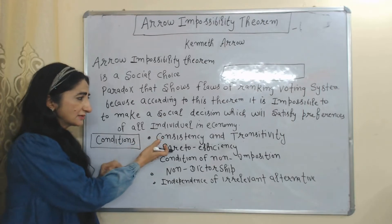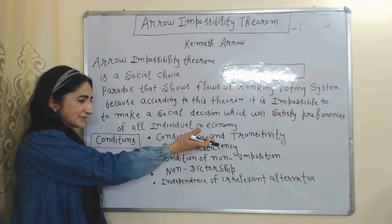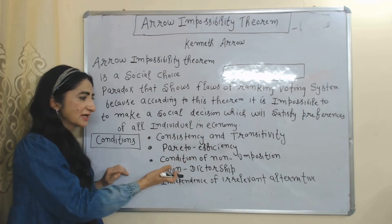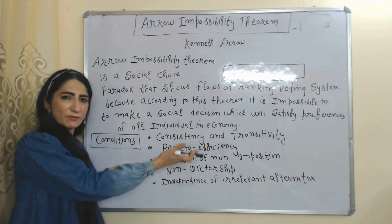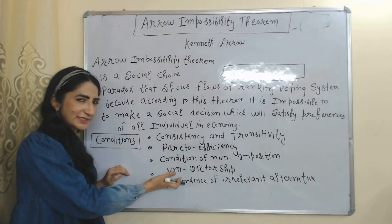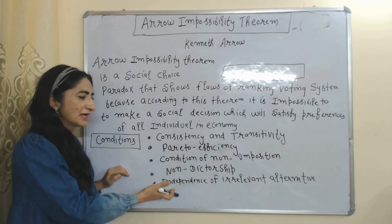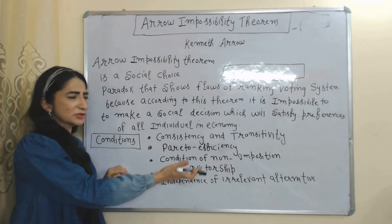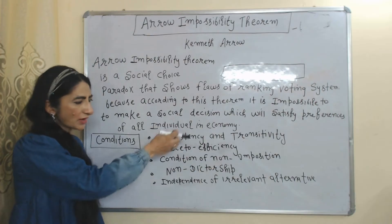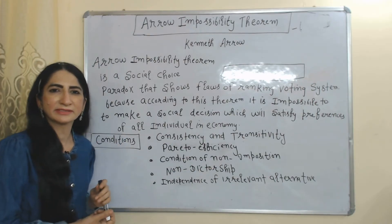The five conditions are: consistency and transitivity, Pareto efficiency, condition of non-imposition, non-dictatorship, and independence of irrelevant alternatives. We will discuss each condition one by one.